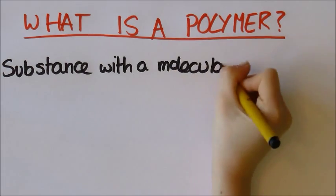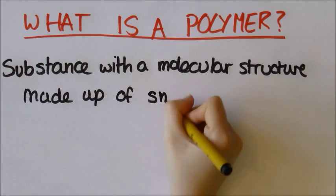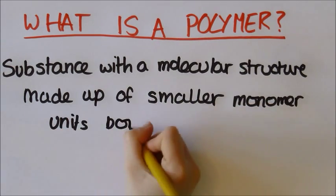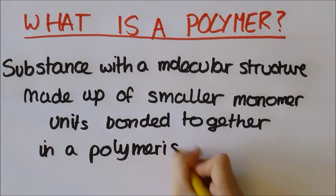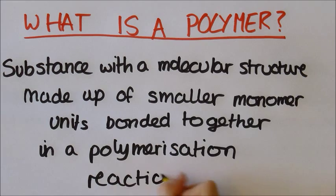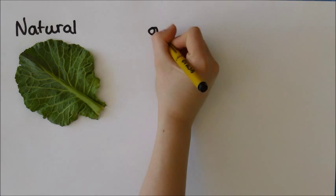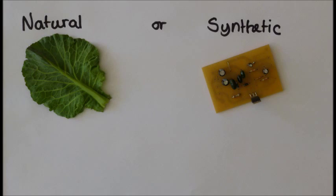A polymer is a substance with a molecular structure made up of smaller monomer units bonded together in a polymerization reaction. Polymers can be natural like DNA and proteins, or synthetic made by humans such as the ones in this circuit board.